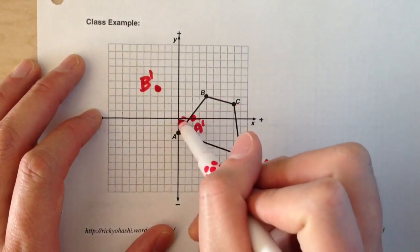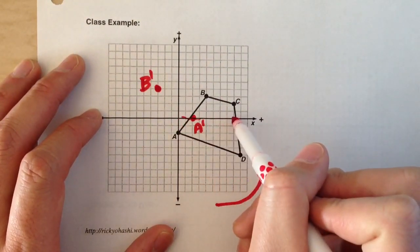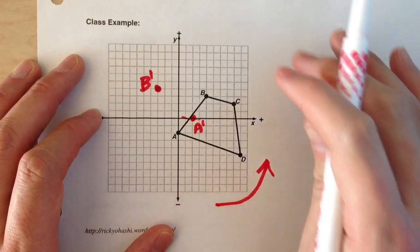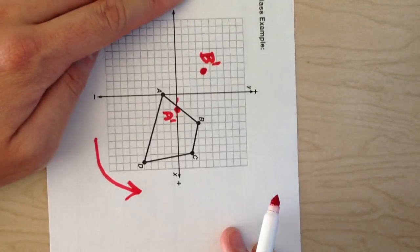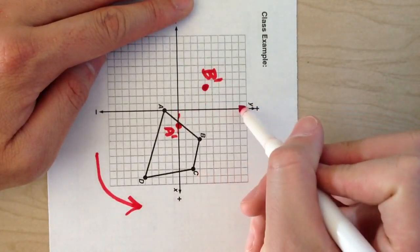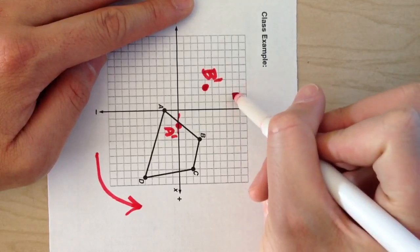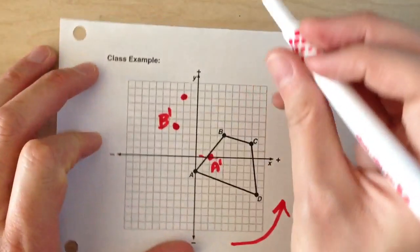Now let's do C. C is eight steps right and two steps up. Rotate my paper. Eight steps right, two steps up. There's C prime.